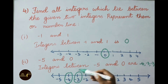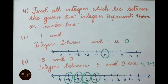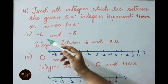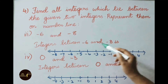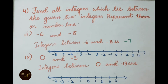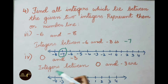Represent minus 4, minus 3, minus 2, and minus 1 on the number line. Third: between minus 6 and minus 8, the integer is minus 7 — represent it on the number line. Fourth: between 0 and minus 3, the integers are minus 2 and minus 1.